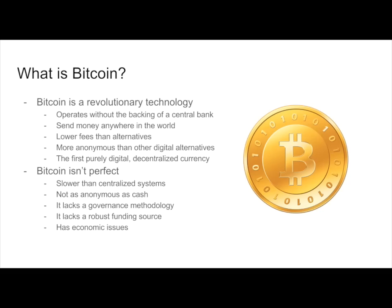So to start, what exactly is Bitcoin? Well, Bitcoin is a revolutionary technology and it is basically a currency that operates without a central bank. What that means is anyone on the network can actually send money from anywhere to anywhere with no one in between. It's also more anonymous than other digital alternatives and it's actually the very first of its kind.